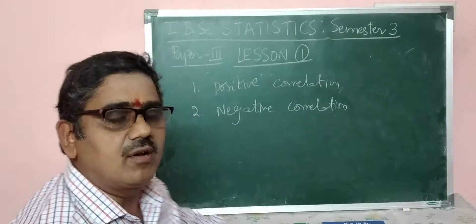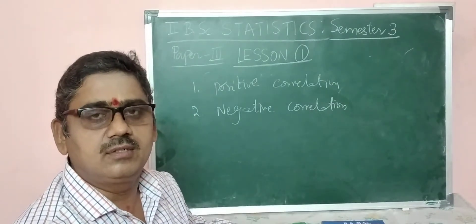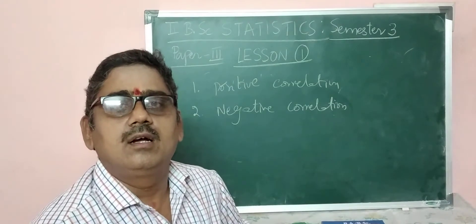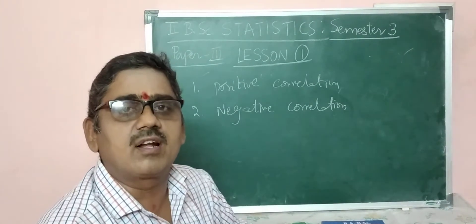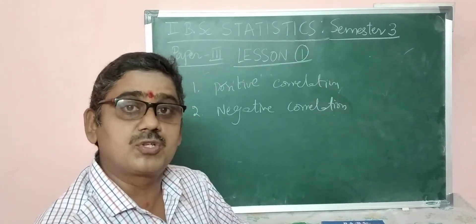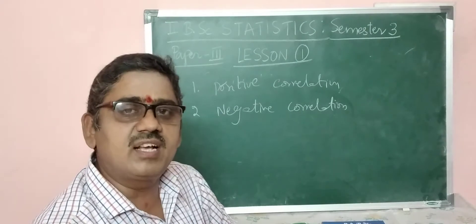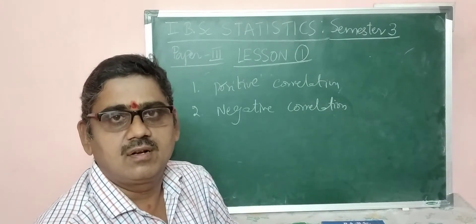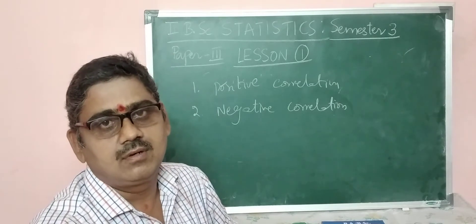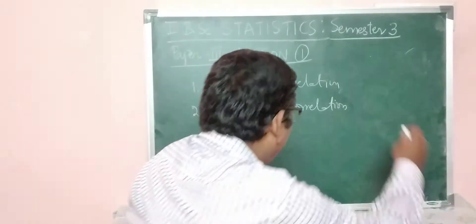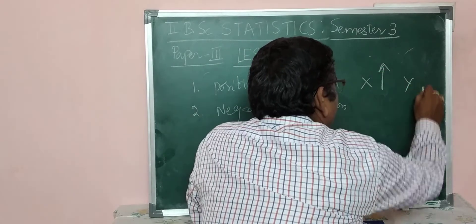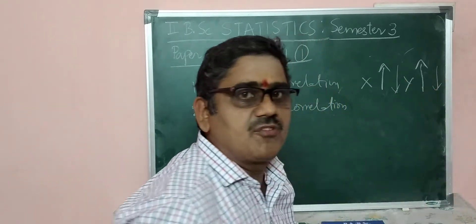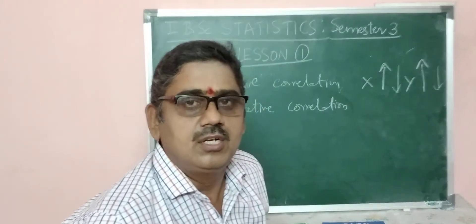When do we say correlation is positive or negative? Positive correlation means if one variable increases, the other variable also increases. If one variable decreases, the other variable also decreases. Which means if one variable changes in one direction, the other variable also changes in the same direction. That is, if x increases, y also increases; if x decreases, y also decreases. Change is observed in the same direction.